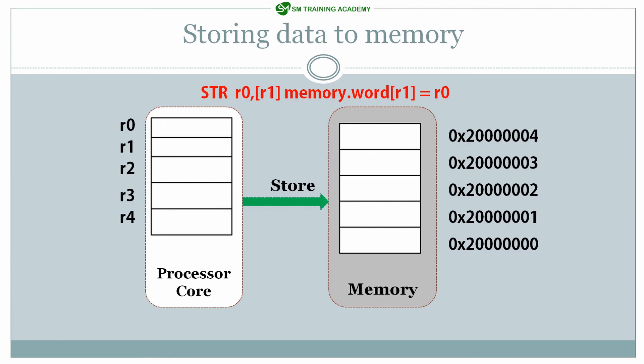The storing instruction looks like this: STR R0, [R1]. This instruction STR R0, [R1] loads the data available in register R0 to the memory address specified in register R1. Let us assume we have the data 0x01020304 in register R0, and in register R1 we have a RAM memory location 0x20000000. What this instruction does is it takes the value or data available in R0 and writes it directly to the memory address specified in register R1.